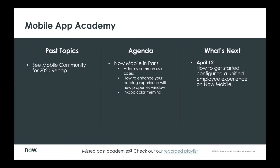We'll cover things like how you can enhance your catalog experience with the new catalog properties window introduced in Paris, as well as in-app mobile theming. A great prerequisite to today's session is our earlier academy called Getting Started with Now Mobile, where we taught you the plugins you need to activate the Now Mobile app, what's available out of the box, how to edit your approvals applet, change fields, configure requests, and much more.